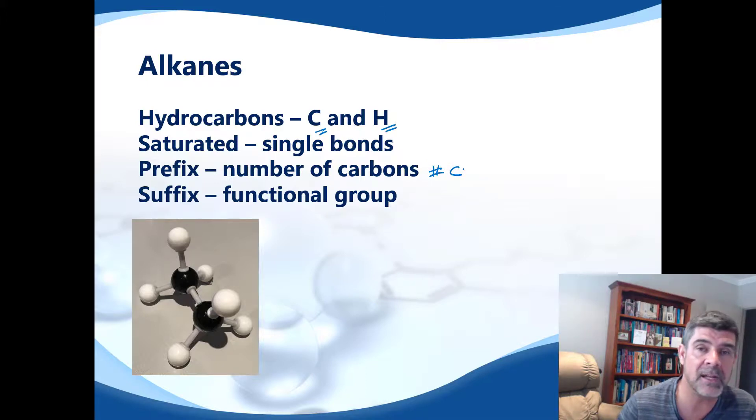We need to count up the number of carbons in the longest continuous chain. If there are side chains and you move off to the side, you can't rejoin the main chain. You must have one continuous chain. It can bend, but it must be one continuous line of carbons. And whatever number that is will correspond to a name.